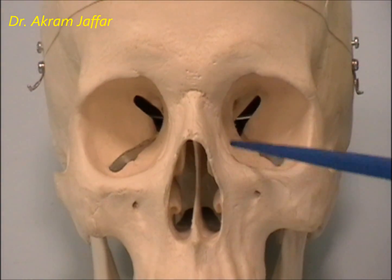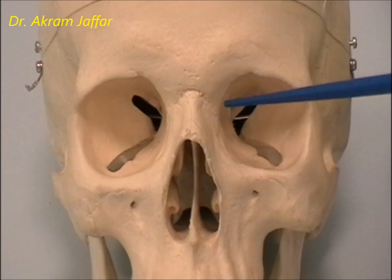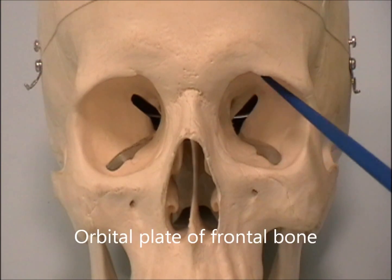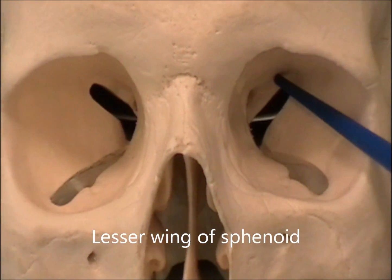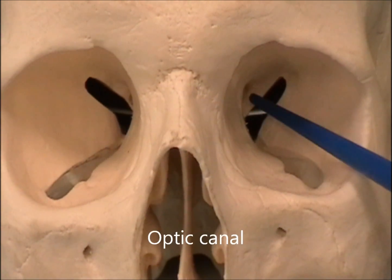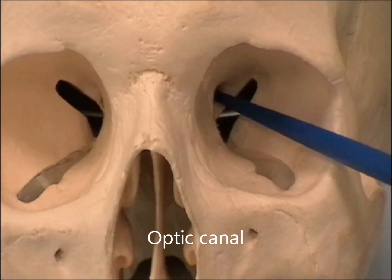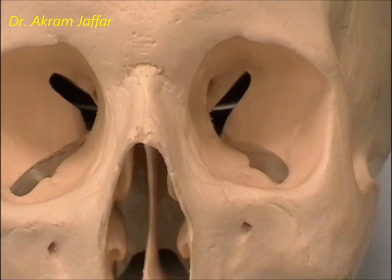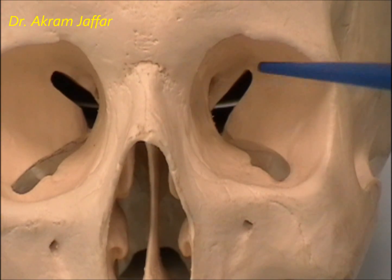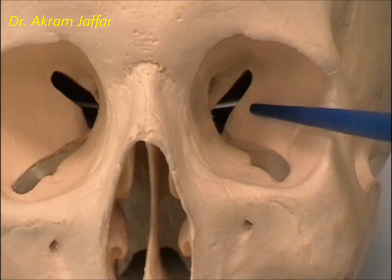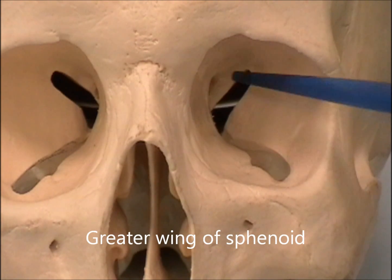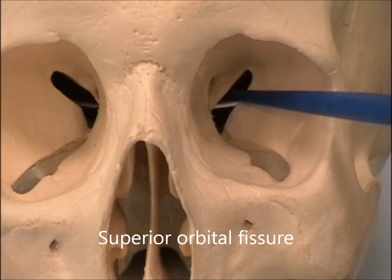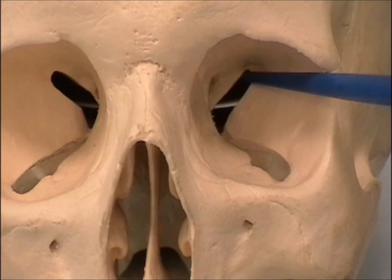There are several bones forming the walls of the orbit. The frontal bone has an orbital plate that forms the roof of the orbit, as well as a piece of the lesser wing of the sphenoid. This piece of the lesser wing of the sphenoid has a foramen — the optic canal — which transmits the optic nerve and the ophthalmic artery. The optic nerve is covered by its meninges. The greater wing of the sphenoid also participates, and between the greater and lesser wings of the sphenoid is a fissure — the superior orbital fissure — which communicates between the orbit and the middle cranial fossa.